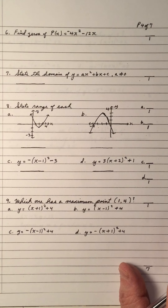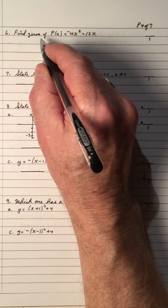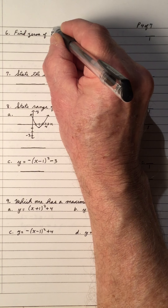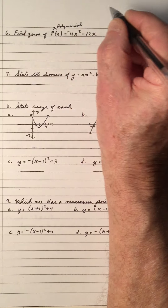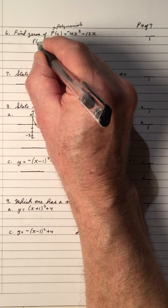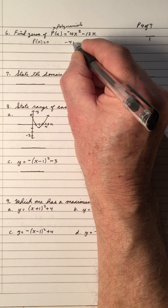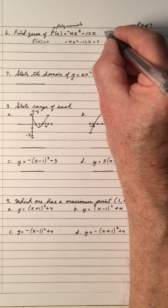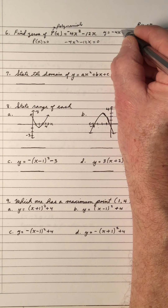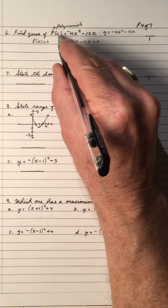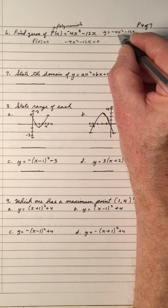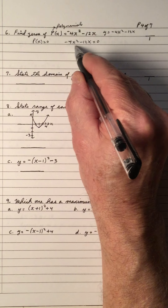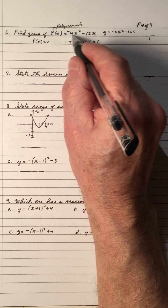Number 6: find the zeros of p(x). The zeros of a polynomial are found by setting p(x) equal to zero. So negative 4x squared minus 12x equals 0. The zeros are the roots of the equation. Setting the equation equal to zero gives roots; graphed, these are the x-intercepts. The terminology differs: zeros, roots, or x-intercepts depending on context.